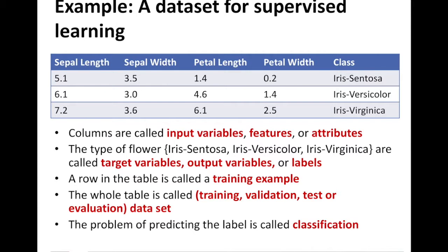So that's what we mean by labeled examples. If you have a bunch of values for sepal length, sepal width, petal length, and petal width, and you don't know which type of flower it is — you only have these values — then that would be an unlabeled example. If you have these values and also have the corresponding label of which type of flower it is, then that is a labeled example.